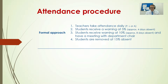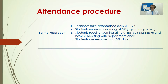The formal procedure here is a summary. Teachers take attendance daily. They put P, L, or A into the system. The system will generate a warning that sends to the student at 5% — this is about 4 days absent. Students will also receive a warning at 10%, and this will trigger a meeting with the department chair. Then at 15% absent, students are removed from the course. This is the formal approach.